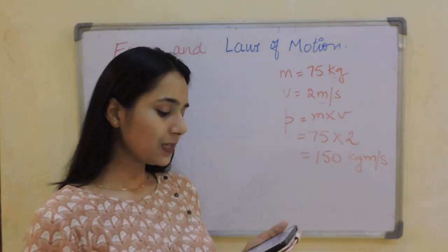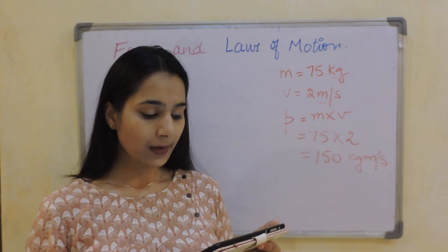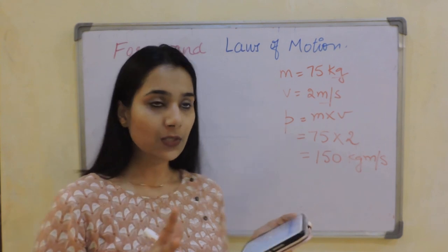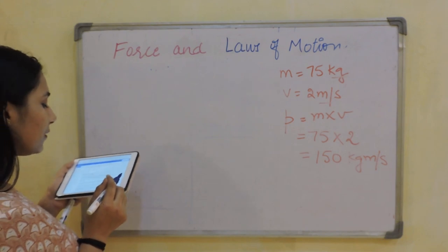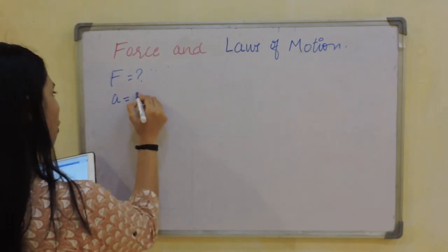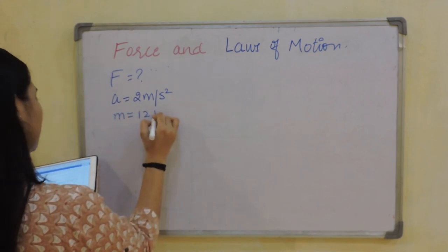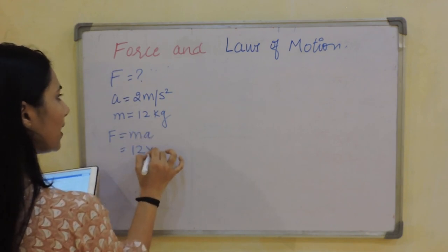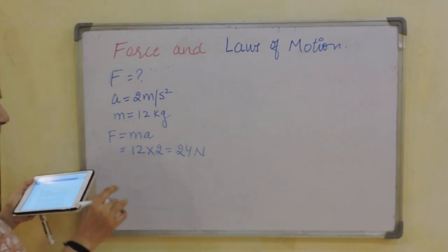Next question: what would be the force required to produce an acceleration of 2 m/s² in a body of mass 12 kg? Using F equals MA: F equals 12 times 2, giving 24 Newton. This is the first case.